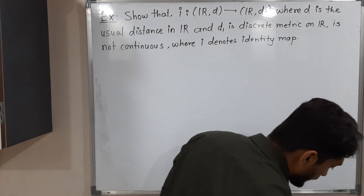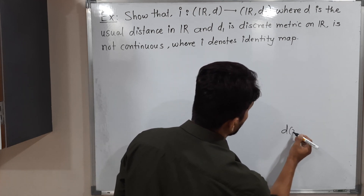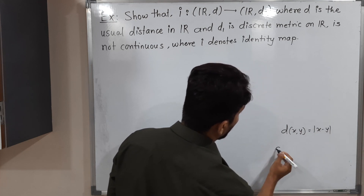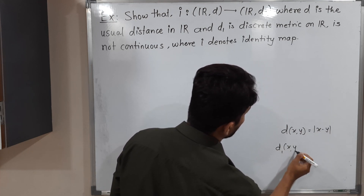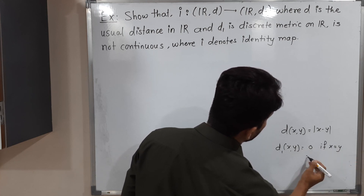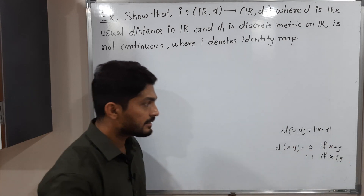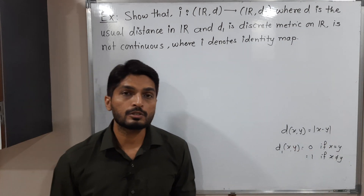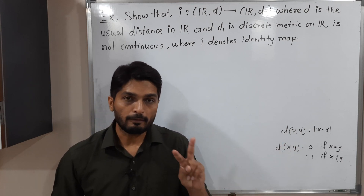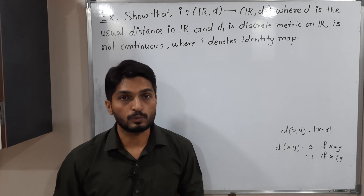Let us recall the definitions. The usual distance is defined as D(x,y) = |x - y|. The discrete metric is defined as: 0 if x equals y, and 1 if x is not equal to y. That means in a discrete metric space we have just two distance values: 0 and 1. If points are the same, distance is 0; if points are distinct, distance is 1.